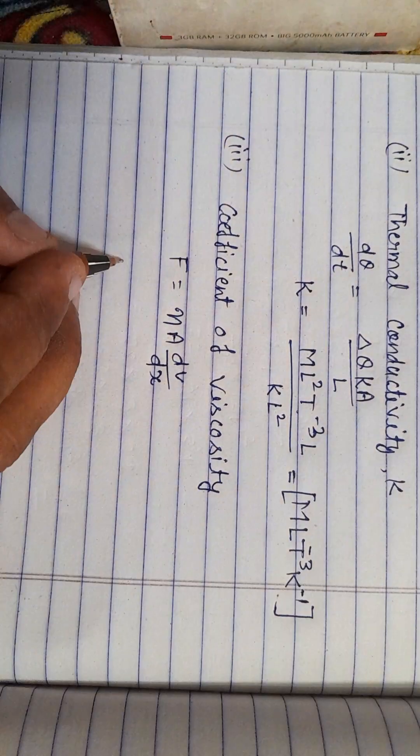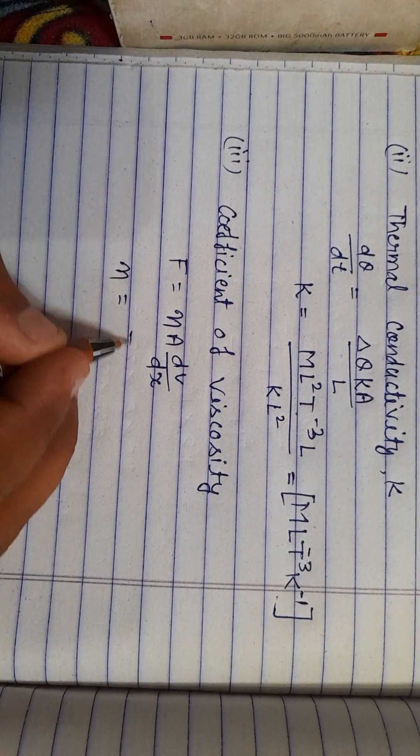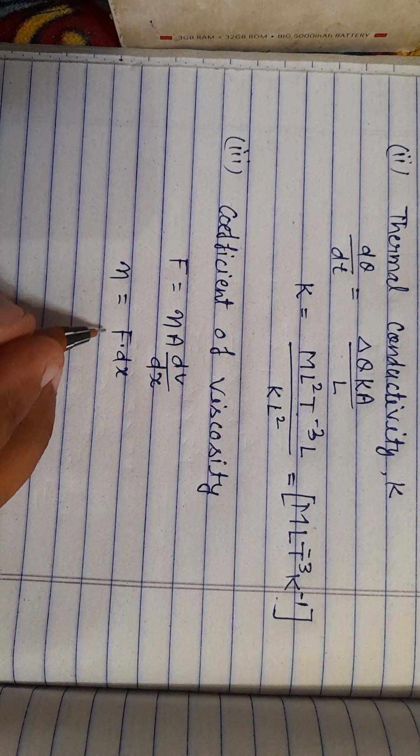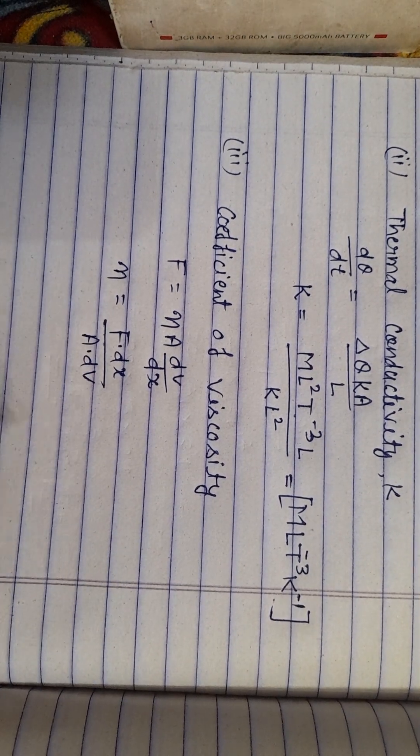From here, eta is equal to F times D X upon A times D V. Put the dimensions of these terms.